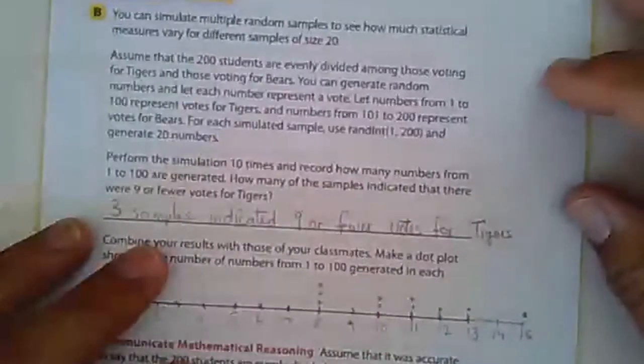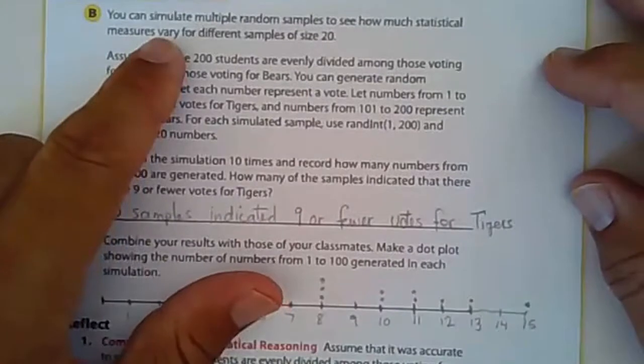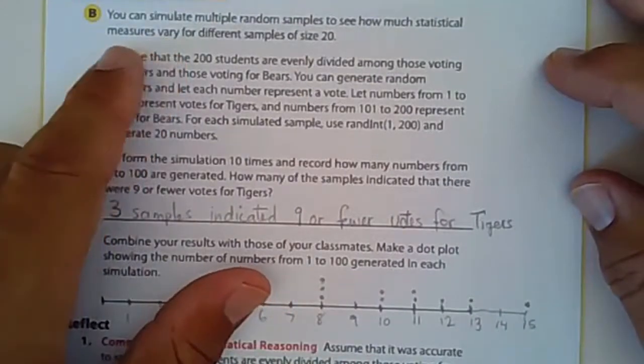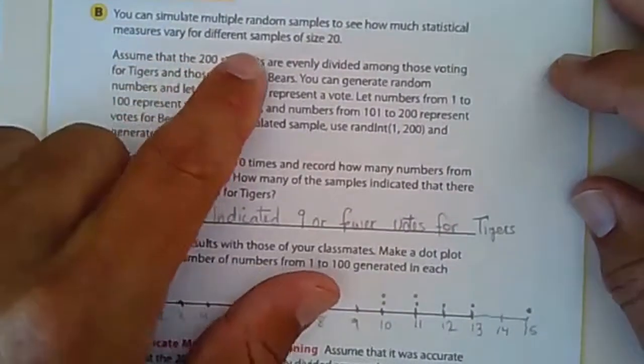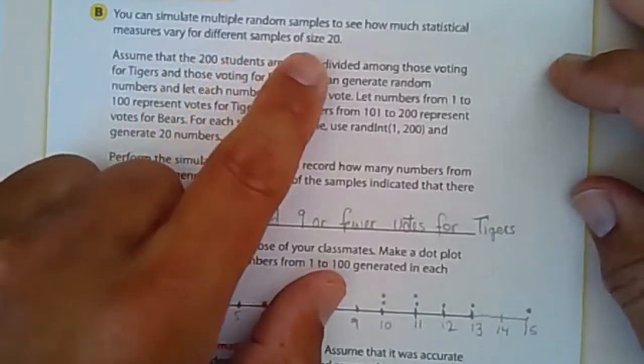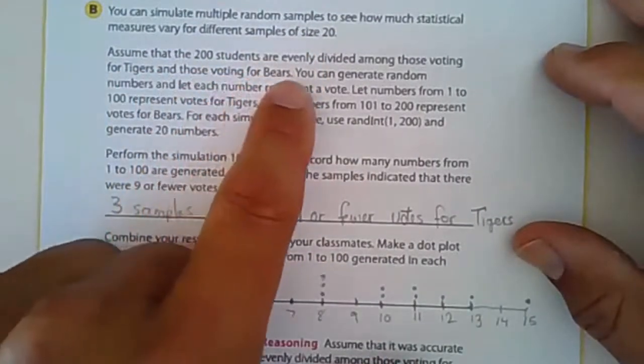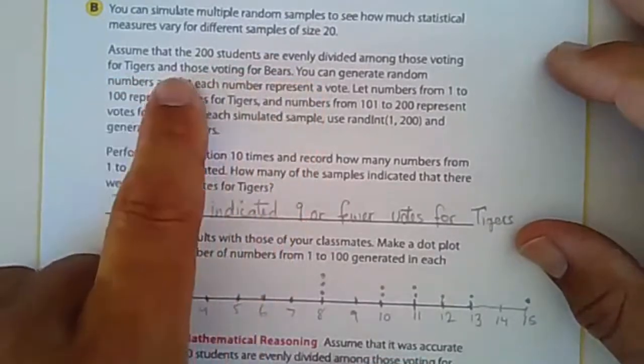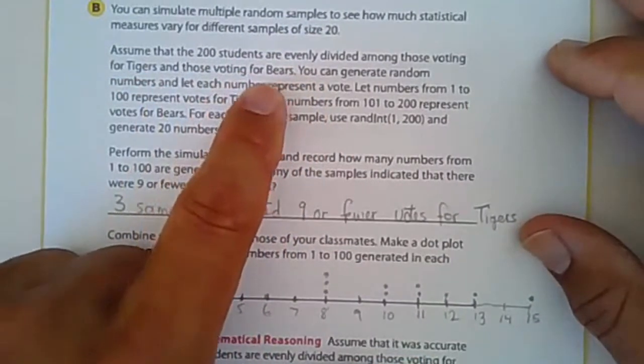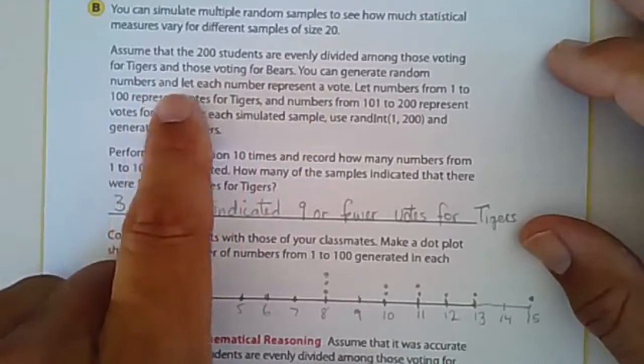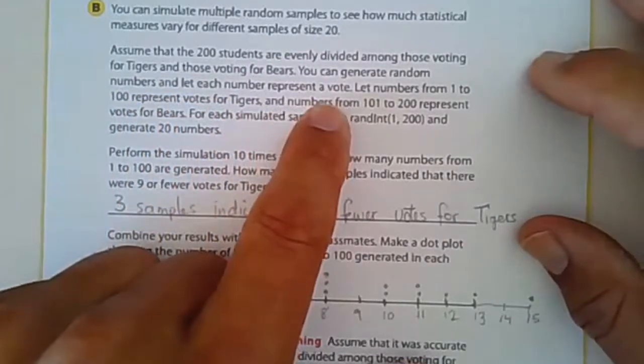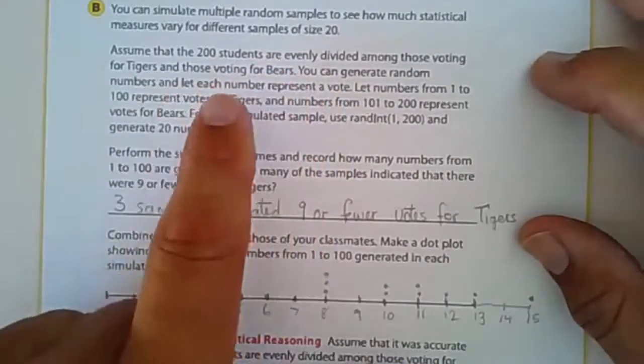Okay, next part B. Now you can simulate multiple random samples to see how much statistical measures vary for different samples of size 20. Now you can assume that the 200 students are evenly divided among those voting for Tigers and those voting for Bears.